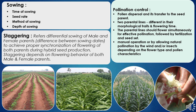The parental lines should flower simultaneously for effective pollination, followed by fertilization and seed setting. Pollination may be done by manual operation or by allowing natural pollination by wind or insects, depending on flower type and pollen characteristics. In crops like maize, pearl millet, bajra, and sorghum there is natural pollination, while in crops like sunflower and cotton there is manual pollination.